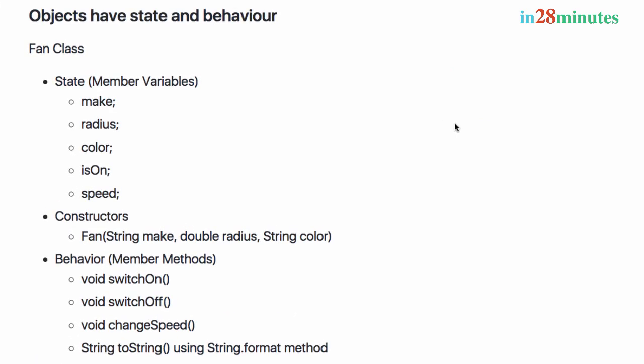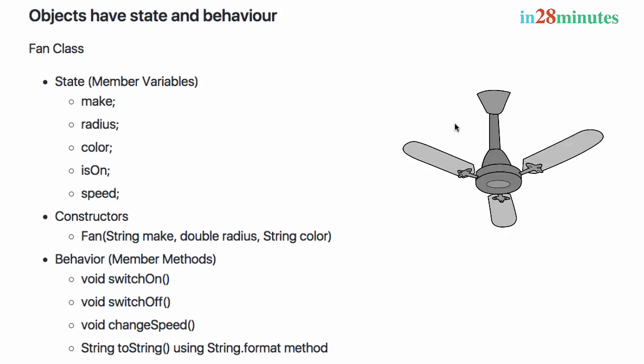In the previous video we talked about the three important questions you need to ask about your classes: what is the state (the member variables), how do you want to allow creation of a specific object (the constructors), and what is the behavior you would want to allow (the member methods). Let's consider an example — a ceiling fan. Not a fan of an actor or director, but a ceiling fan that gives you a little bit of wind.